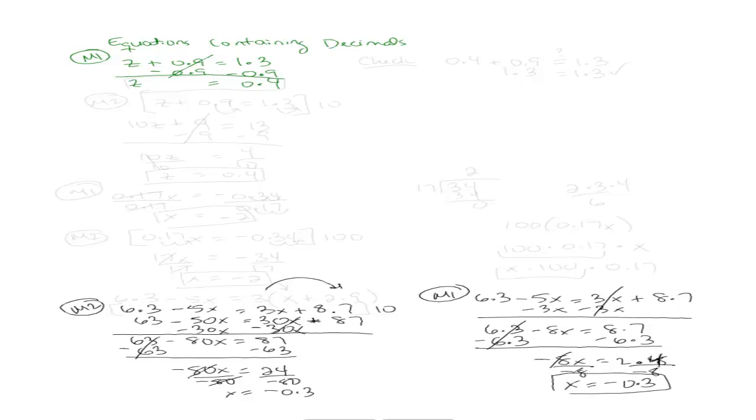I can check that the same way that I would check any other problem. Just plug the 0.4 back into z. 0.4 plus 0.9 should give me 1.3. If I'm lining up my decimals, 4 plus 9 is 13, carry the 1, bring down the decimal point, 0 plus 0 is 0 and 1 is 3. So the two sides equal, which means that my answer is correct.